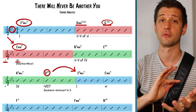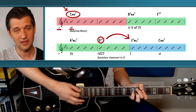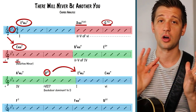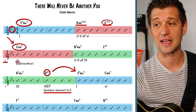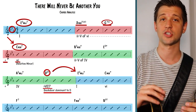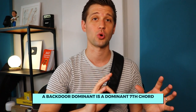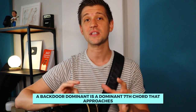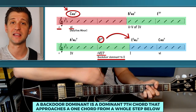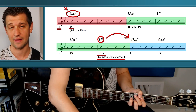We're in the key of E flat for 'There Will Never Be Another You,' so we're resolving to that E flat major seven. This D flat seven is called the back door dominant — you can also think of it as the flat seven of the key center. A back door dominant by definition is a dominant seventh chord that approaches a one chord from a whole step below. D flat seven is a whole step below E flat major seven.